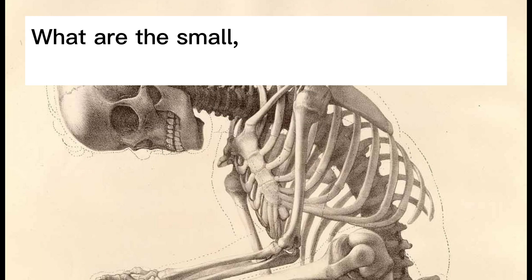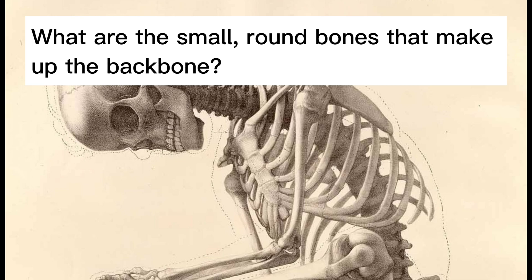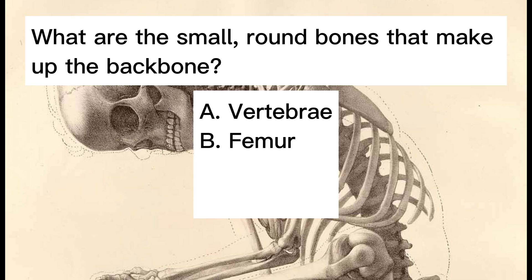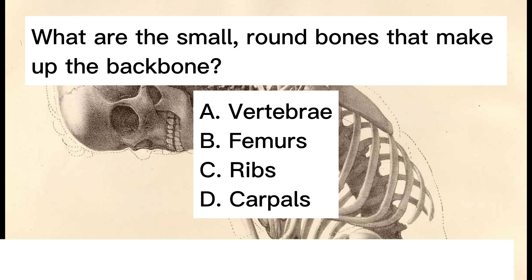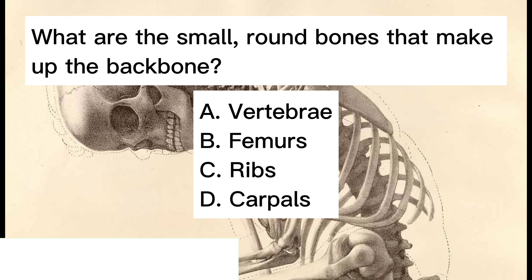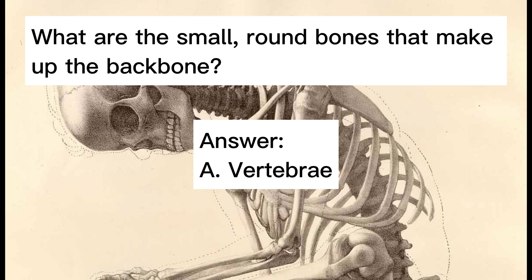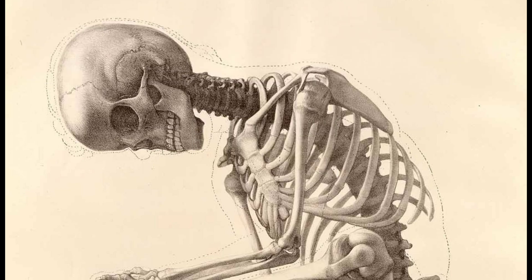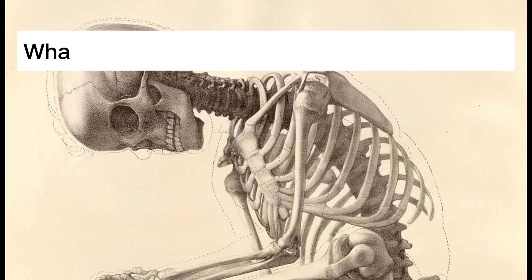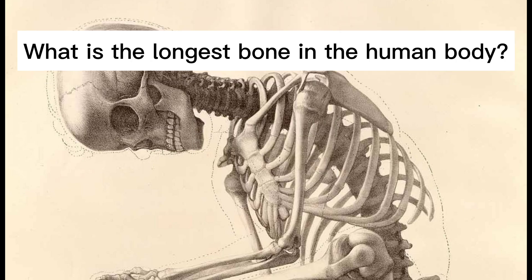What are the small, round bones that make up the backbone? A. Vertebrae. B. Femurs. C. Ribs. D. Carpals. Answer: A. Vertebrae.